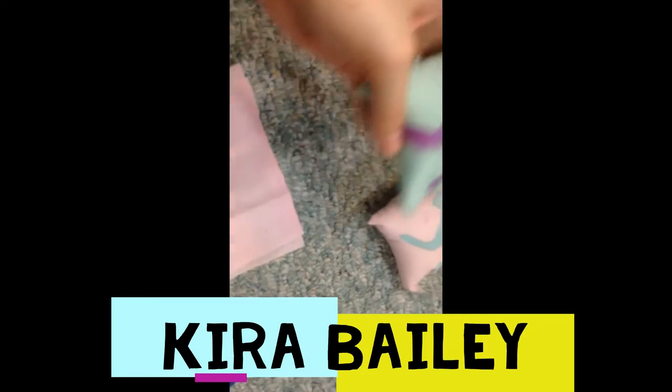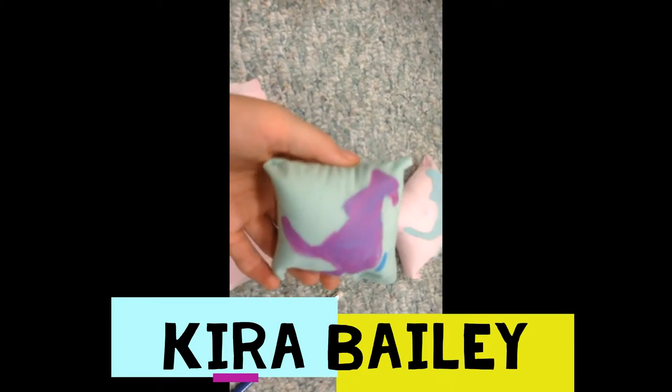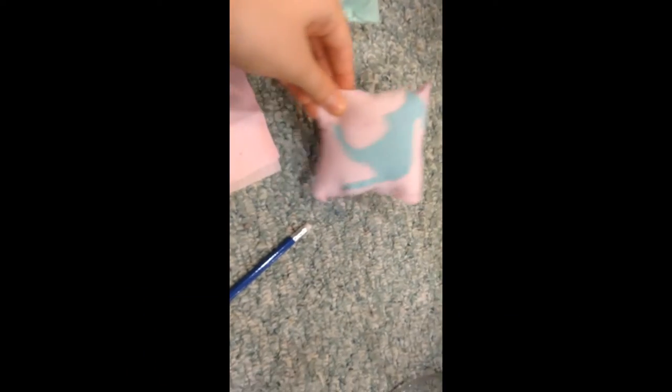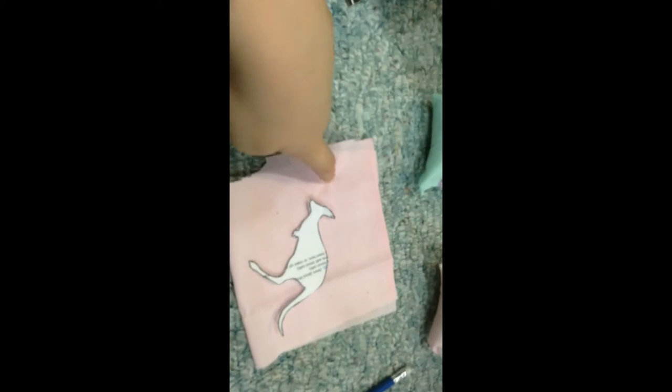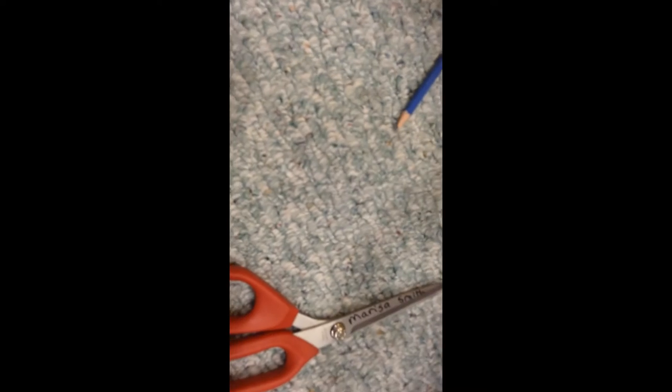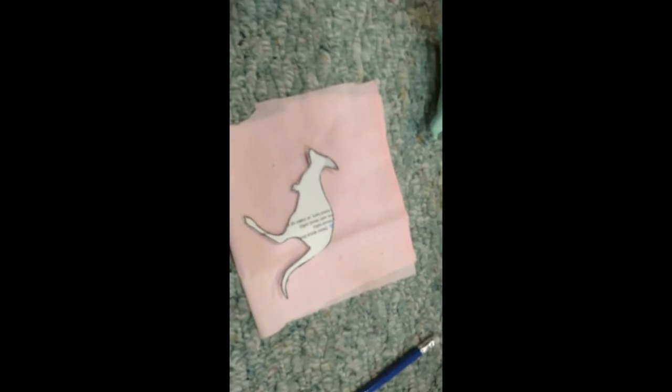Hey guys, welcome back to AGDC. Today I'll be showing you how to make this really cute kangaroo pillow inspired by the new 2021 Girl of the Year, Keira Bailey. What you're going to need is some fabric, a kangaroo template, a pencil, some fabric scissors, and a sewing machine or you can sew by hand, whichever you prefer. Let's get right into it.